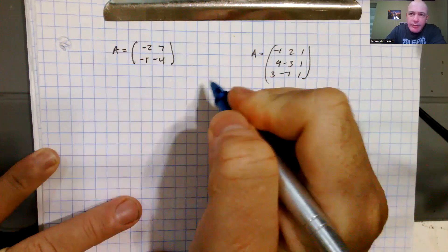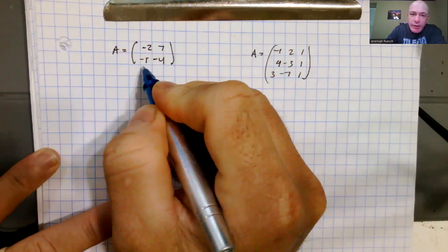All right, we're going to calculate the determinant of these two matrices, so we'll start with the 2 by 2 in the first case.